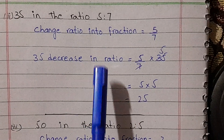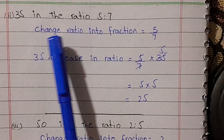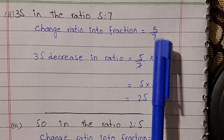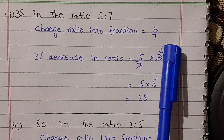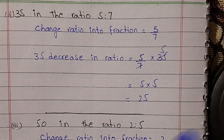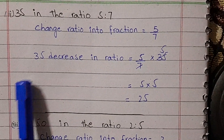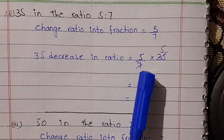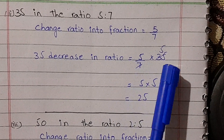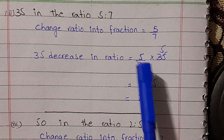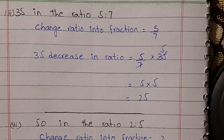We decrease 35 in the ratio of 5 to 7. We change the ratio into a fraction: 5 over 7. You can see that this is a proper fraction, so the quantity is decreased. We multiply 5 over 7 by 35. We divide 35 by 7, and then multiply by 5.